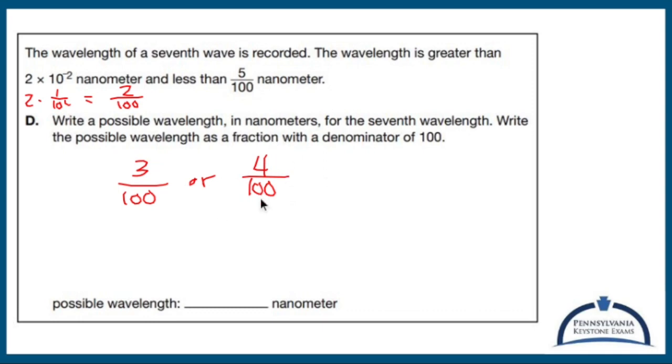Now, what I'm not going to use, and maybe they'd accept this, I honestly don't know, but what I'm not going to use is 4/100 because that simplifies to 1/25. I'm going to go with 3/100 as a possible wavelength because that is in between 2/100 and 5/100, has a denominator of 100, does not simplify, and it follows all of these requirements. So gross, but fun.